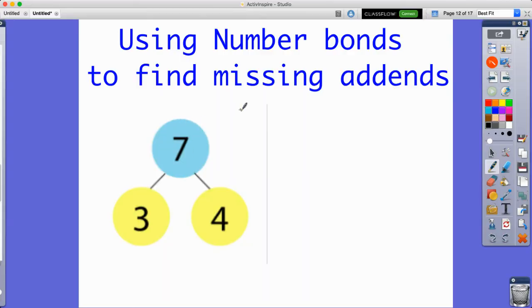Just remember that this number on top is going to be our sum. We know that because it's in blue, and then these two are both yellow. So that means that they are going to be our addends here.